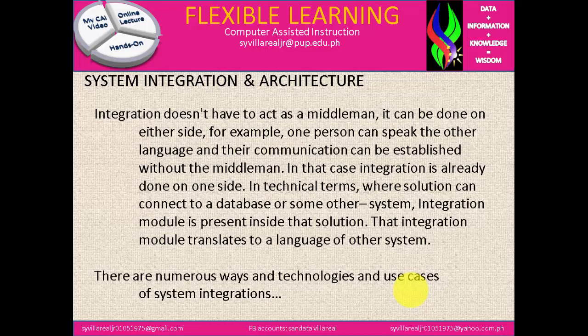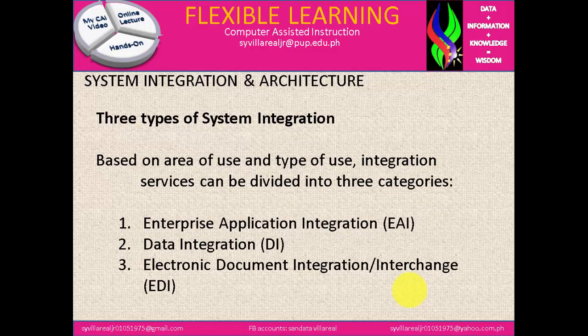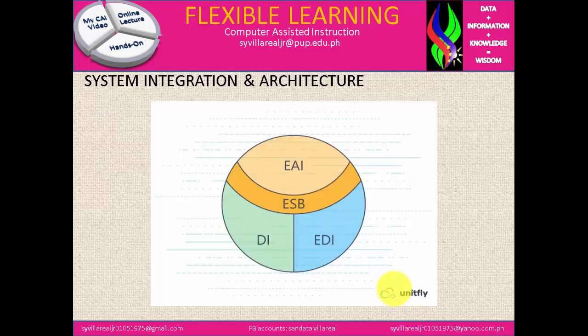There are numerous technologies and use cases of system integration. We have three types of system integration based on area and type of use. Integration services can be divided into three categories: the first is Enterprise Application Integration, or EAI; the second is Data Integration, or DI; and the third is Electronic Document Interchange, or EDI. In the figure, we have these three types with the ESB in the middle separating the EAI, DI, and EDI.